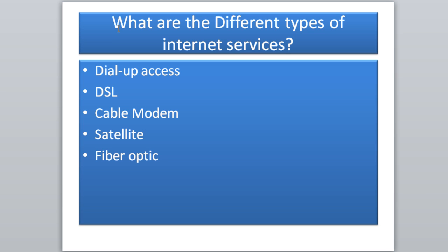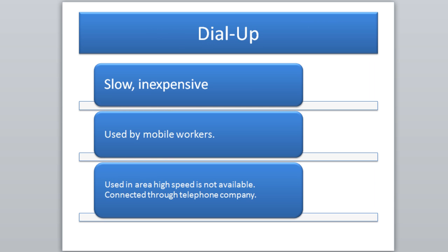Our first topic is dial-up. Dial-up is very slow and inexpensive — it's really outdated. Back in the 90s dial-up was popular, but around 2004 DSL hit the scene and dial-up became really outdated. Right now dial-up would probably cost you about five dollars a month because it's so slow and nobody really uses it.